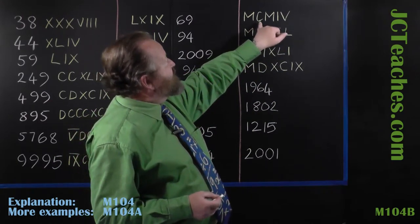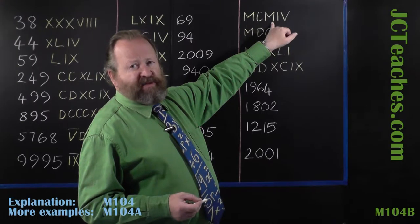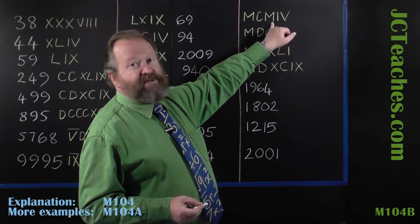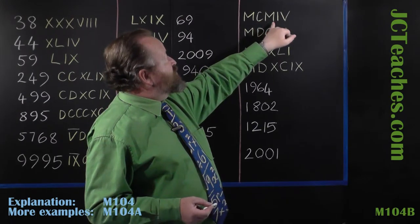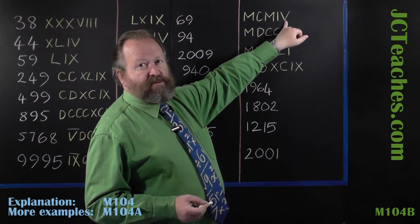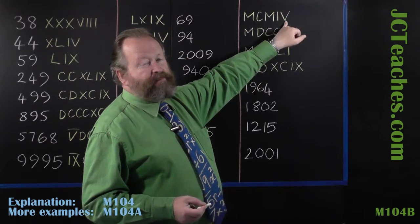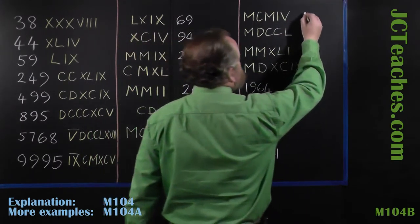So we've got here MCM. MCM is 1,900, and you very often see that on television programmes and films of course. So that's 1,904.